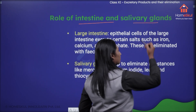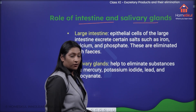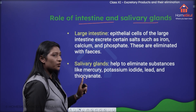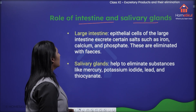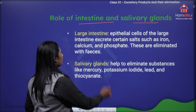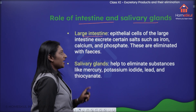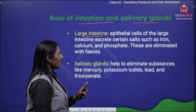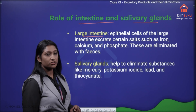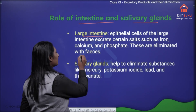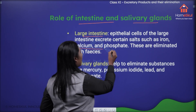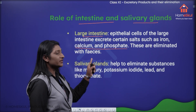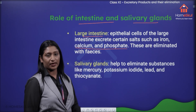Salivary glands also play a role in excretion. The large intestine — epithelial cells of the large intestine excrete certain salts, iron, calcium and phosphate, and these are eliminated with the fecal matter.